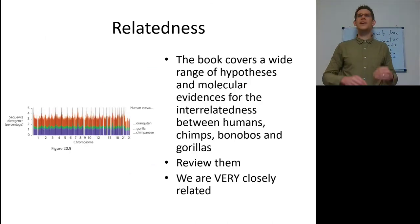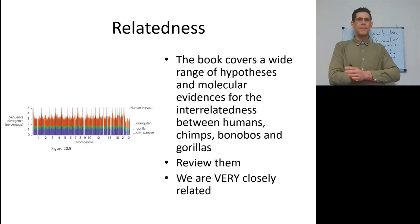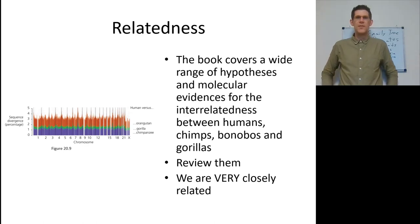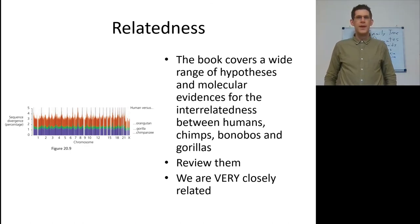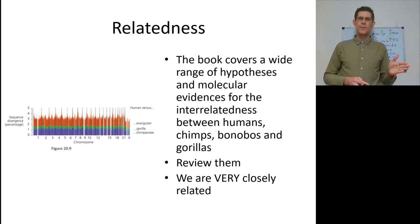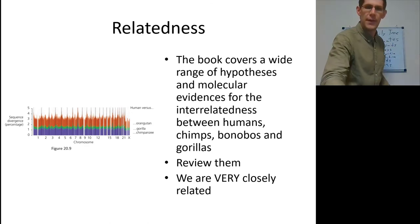Your book covers a wide range of hypotheses and molecular evidence for how interrelated humans, chimps, bonobos, and gorillas are — you should review it. Looking at sequence divergence, there's about 1% difference between humans and chimpanzees for all sequences. Of course, it's how the sequences are used that matters. Humans versus orangutans and gorillas varies more, but we're very, very closely related to chimps. It is a very recent break — either we share a very recent common ancestor with chimpanzees, or we were created with about 99% relatedness to chimpanzees for reasons unknown.